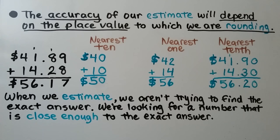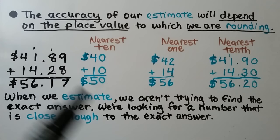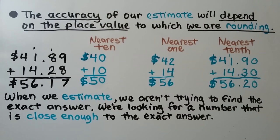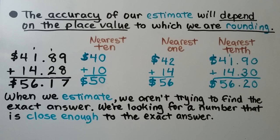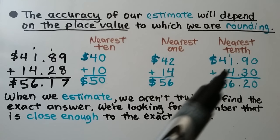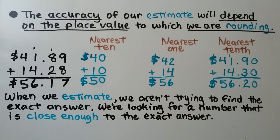If we round to the nearest tenths place, this 9 tells the 8 to go up to a 9, which turns into a 0, giving $41.90. And this 8 tells the 2 to go up to a 3, which turns into a 0 when finished, giving $14.30. We add them together and get $56.20. We can see that these two amounts — $56 and $56.20 — are very close, so they are more accurate than the $50 estimate.